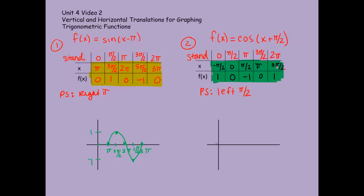Since I'm moving to the left by pi over 2, I'm going to label: negative pi over 2, then 0, then pi over 2, then pi, and ending at 3 pi over 2. Please try to be consistent in your spacing — those are your five tick marks. I go up to 1 and down to negative 1. I begin at 1, go to 0, negative 1, 0, back up to 1. Make sure you're curving your cosine graph correctly. And this shows my cosine graph shifted to the left by pi over 2.